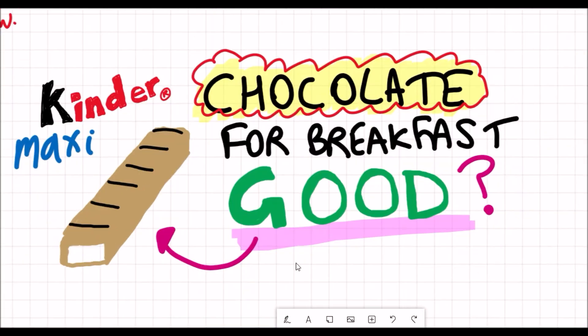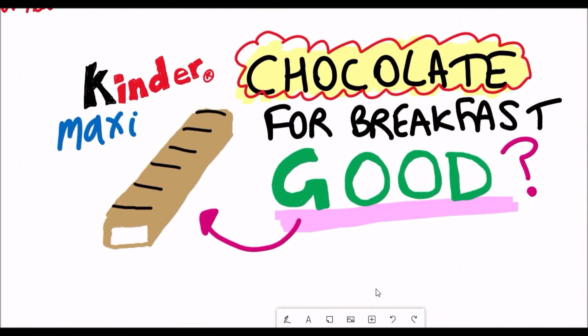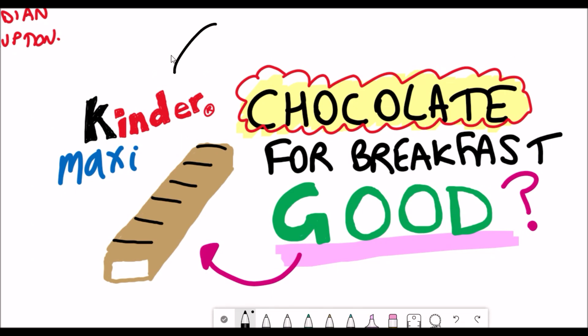Well no, you have to remember that the rats only had 5 grams whereas one of these whole Kinder Maxi bars is 20 grams, which let's be honest is nothing in terms of a chocolate treat.